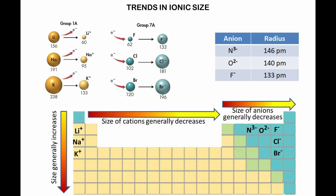Trends: Within a group, the size of an ion generally increases from top to bottom in the periodic table. Within a period, the size of an ion generally decreases when moving from left to right across a period.